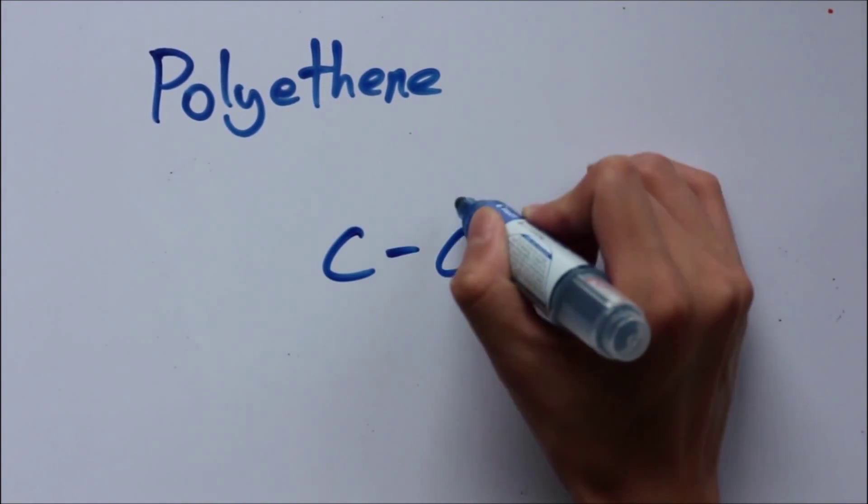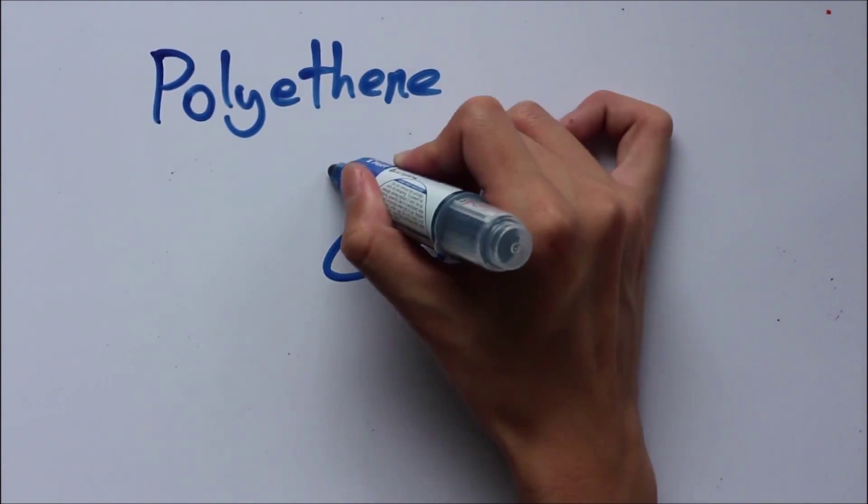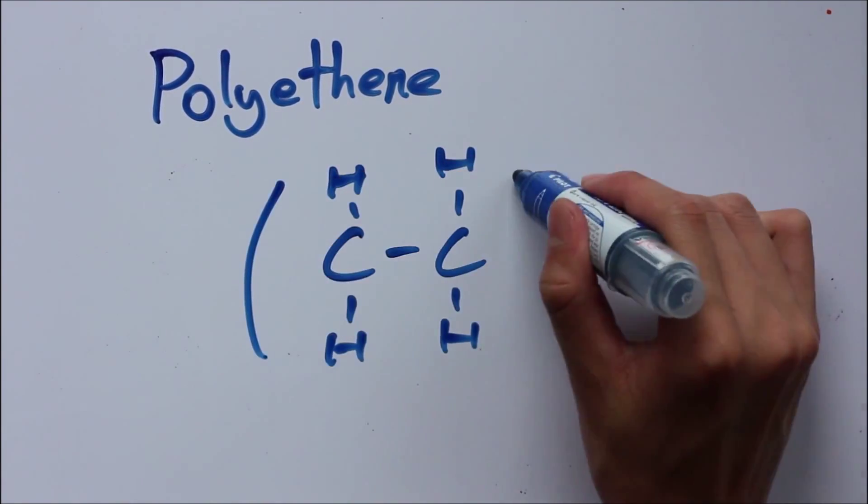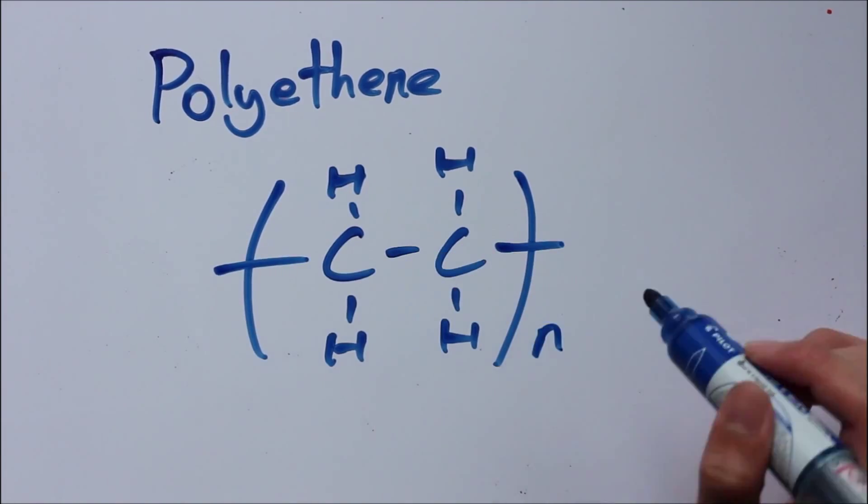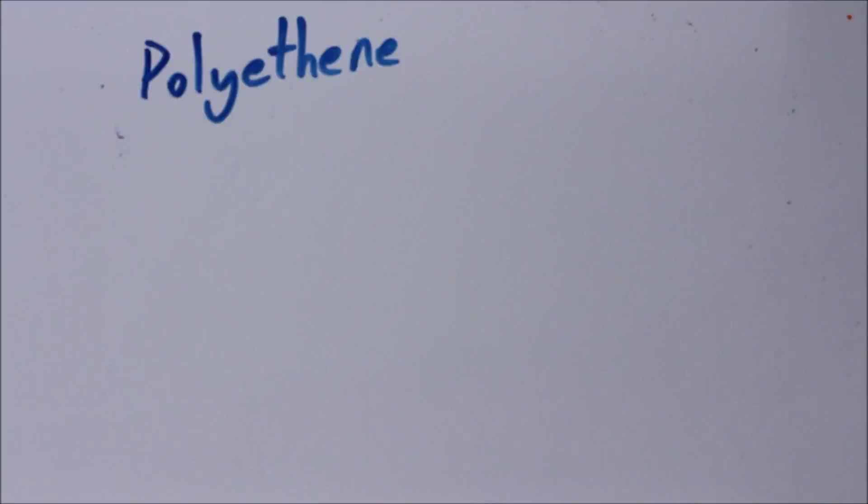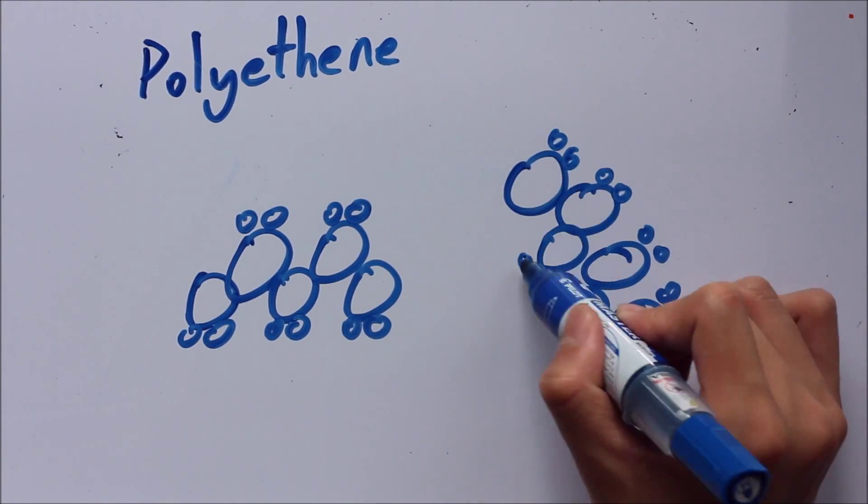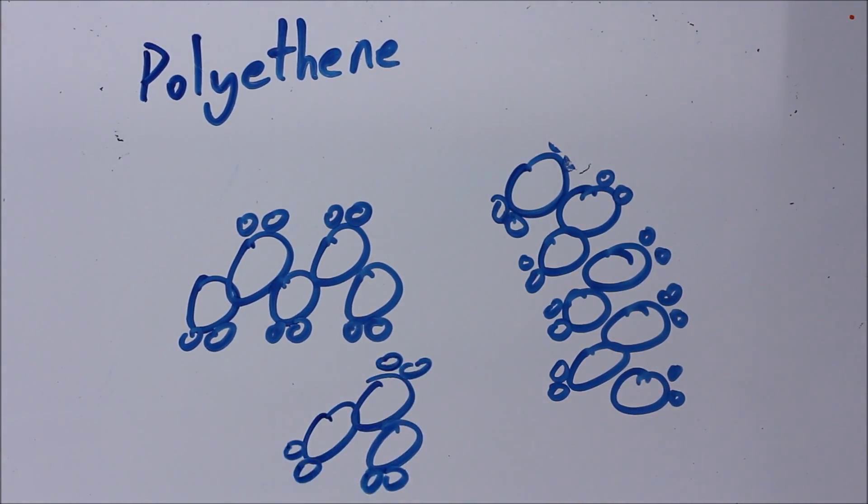It has a surprisingly simple structure, basically a repeating structure of ethene, as the name polyethene suggests. Poly meaning many ethenes. Because these polyethene molecules have various sizes, this plastic is actually a mixture of similarly structured molecules with different lengths.